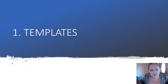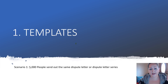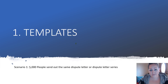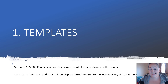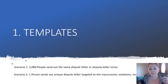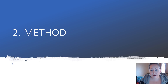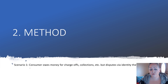Number one is templates. You're using templates when you're not supposed to. Scenario one: 5,000 people send out the same dispute letter or dispute letter series. Compare that to one person who sends out a unique dispute letter targeting the inaccuracies, the incompleteness, the violations — obviously the second method is going to be better.